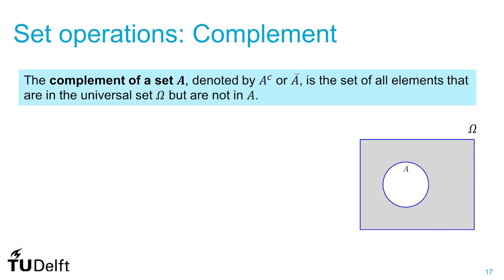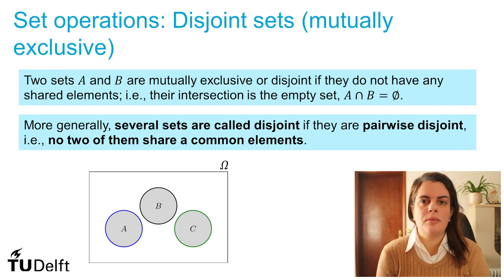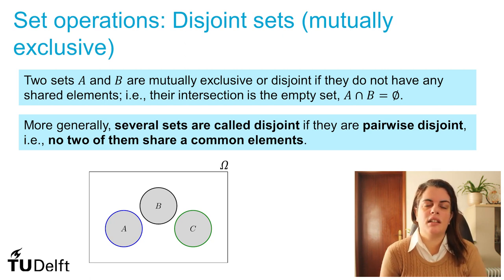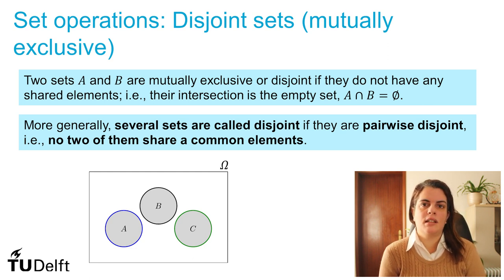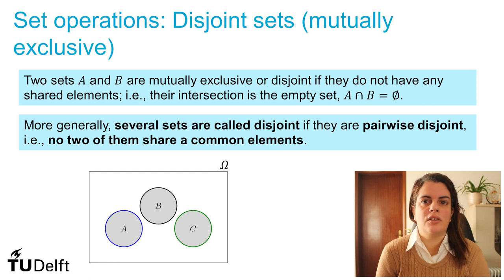The complement set consists of all elements that are not in the set of interest — that is, all elements that are in the universal set but not in set A. Sometimes there are cases in which there is no possible intersection between sets, and in those cases we say that the sets are disjoint. The intersection between the sets is the empty set, meaning there are no shared elements between them. This notion can be generalized to more than two sets.